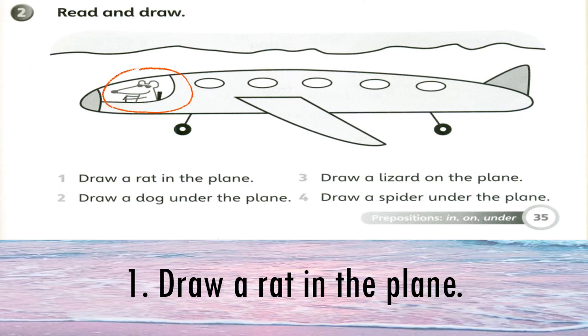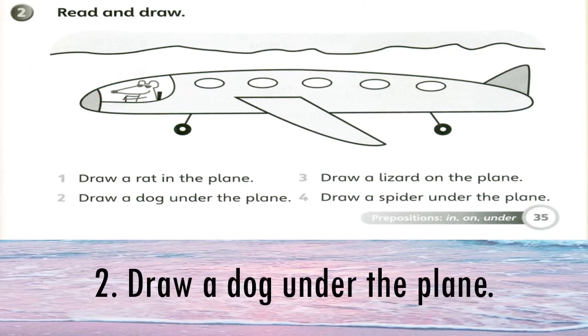Let's look at sentence number two. Draw a dog under the plane. Awak kena draw, lukis, a dog seekor anjing under. Under tadi apa? Di bawah. Lukis seekor anjing di bawah kapal terbang. You are going to draw a dog under the plane. Contohnya macam ni.